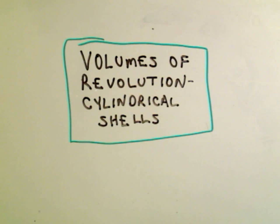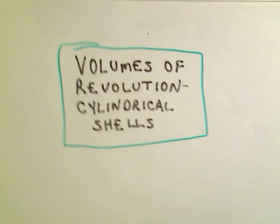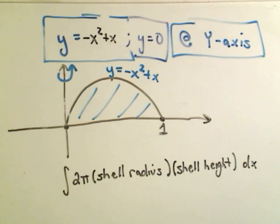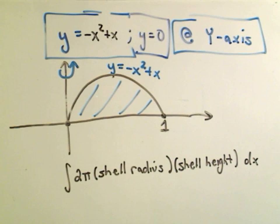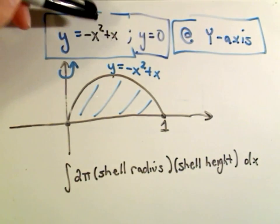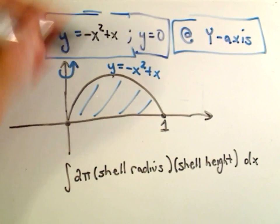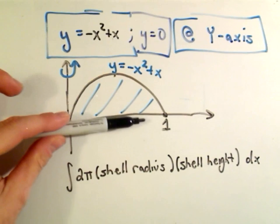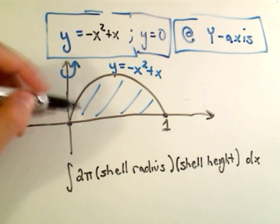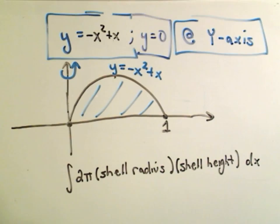In this video I want to talk about finding volumes of revolution using the cylindrical shells method. The function I'm going to use here is y equals negative x squared plus x, which is just a parabola opening downwards. The line y equals 0, which is just the x-axis, so we're going to get the region here that I have lightly shaded in blue.